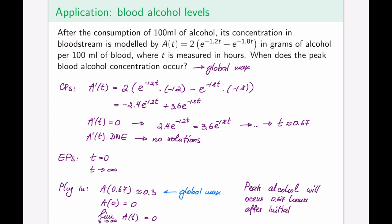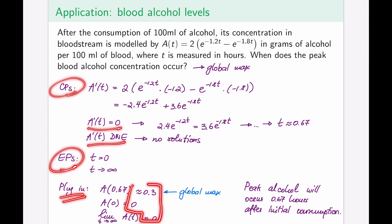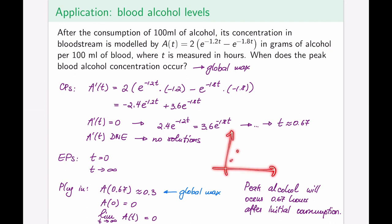Remember, this model assumes only 100 milligrams of alcohol were consumed and no more was added, and it may not match every person's body type or metabolism. Mathematically, nothing new was introduced: find critical points (derivative zero or not existing), find endpoints, plug all into the function, compare heights, and the highest value is the global maximum. The same method applies regardless of whether the functions involved are exponential, polynomial, or otherwise.